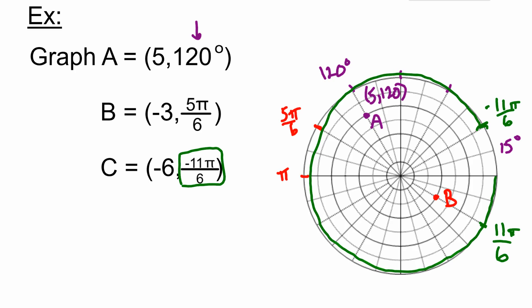It's the same terminal angle as 30 degrees. We're dealing with essentially 30 degrees, then we go negative 6, so the opposite direction: 1, 2, 3, 4, 5, 6. That point right there is C.